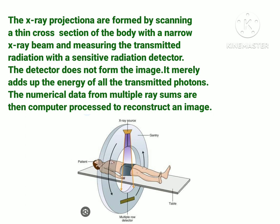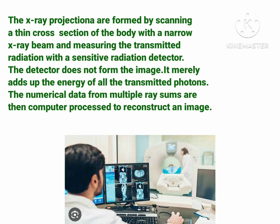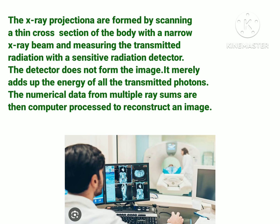The detectors in CT scan are greater in number compared to a normal x-ray machine, which has only one detector. When the narrow x-ray beam passes through the thin cross-section of the body, it scans the part under examination. This x-ray beam is then transmitted to detectors where the transmitted radiations are measured in the form of numerical data, which is then transferred to computers for processing. The data is processed, all rays are summed up, and the image is constructed with the help of computers.